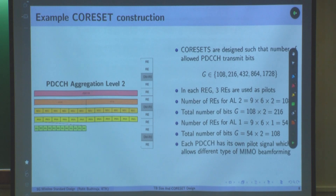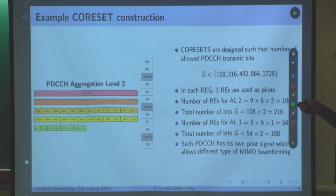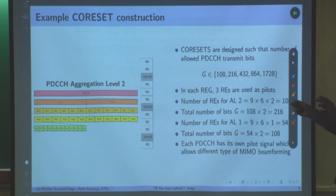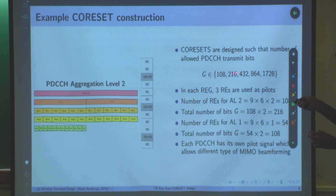If certain restrictions are imposed on the CORESET size — and these are those restrictions — the user will search over one CORESET knowing it can only be of specific sizes (1, 2, 4, 8, or 16 CCEs). It will not search over all possible arbitrary sizes. That restricts the number of blind decoding attempts to 36 for FR1. If arbitrary sizes were allowed, the number of attempts would become 136 or even infinite.